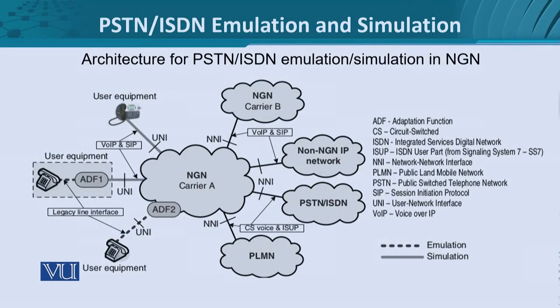Let's look at the architecture for simulation and emulation together — the complete architecture of PSTN and ISDN integration into NGN, either using simulation or emulation. Here we have NGN carriers A and B, where A is the reference architecture carrier we'll examine for a better understanding. As for non-NGN IP networks and traditional PSTNs, we look at those only briefly.